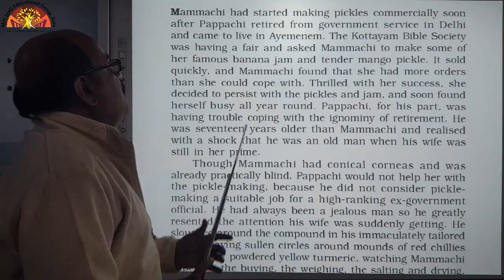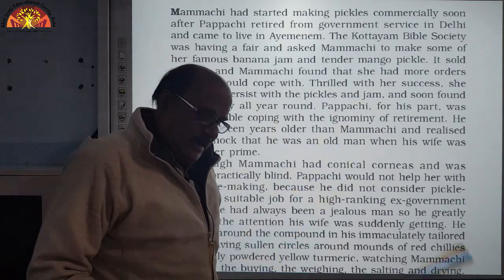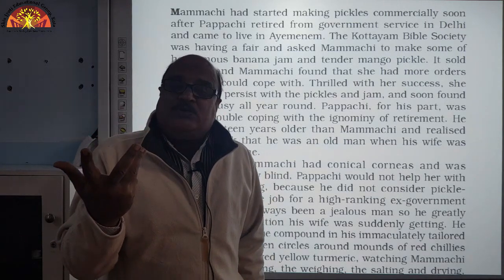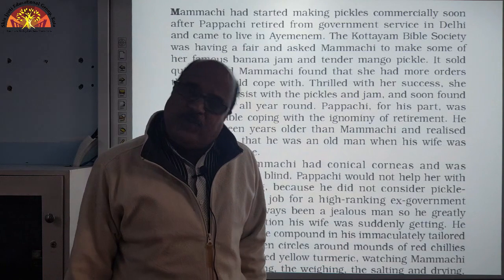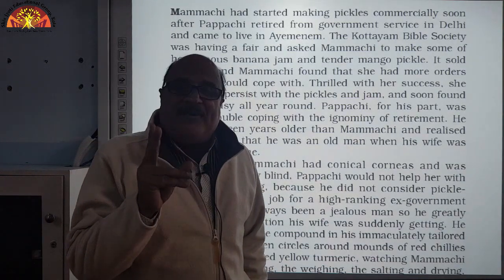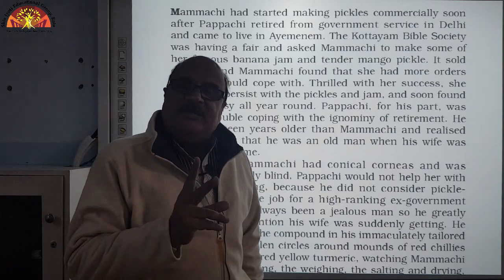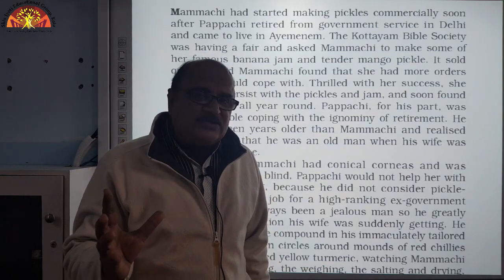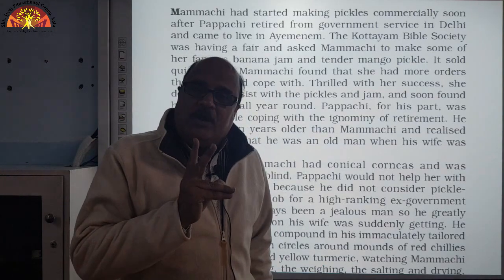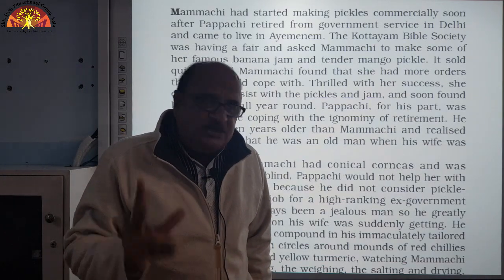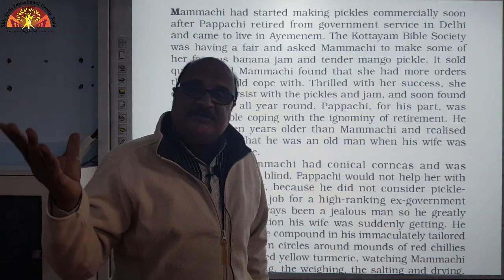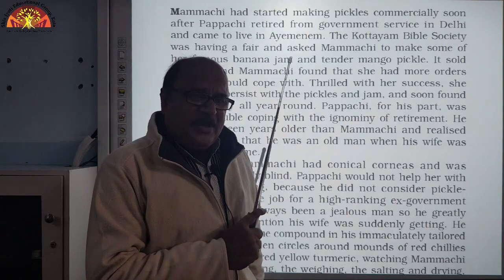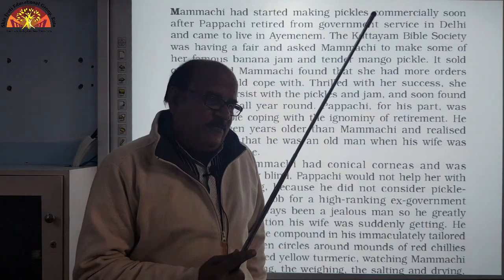Before we start this chapter, let me summarize it so that it will become easier for you to understand. The main protagonist is Papaji, and the second main character is Mamachi. Papaji and Mamachi are husband and wife, and they have two children, Amu and Chako. Chako goes abroad for further studies.